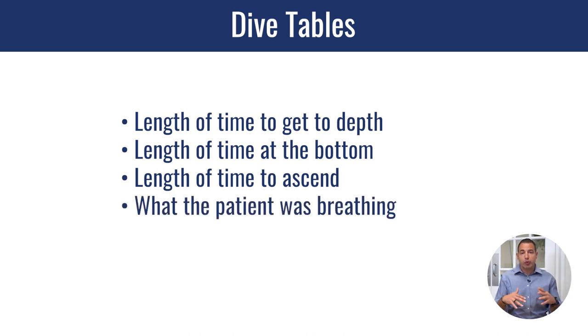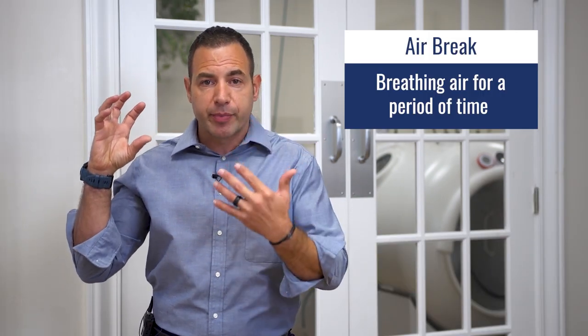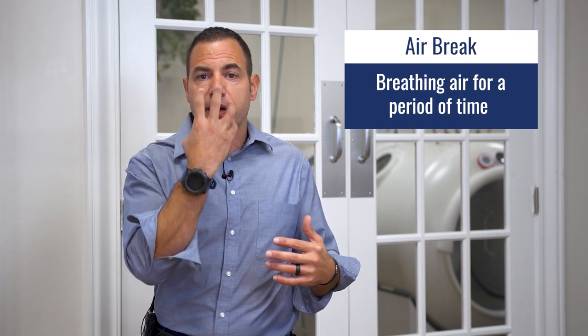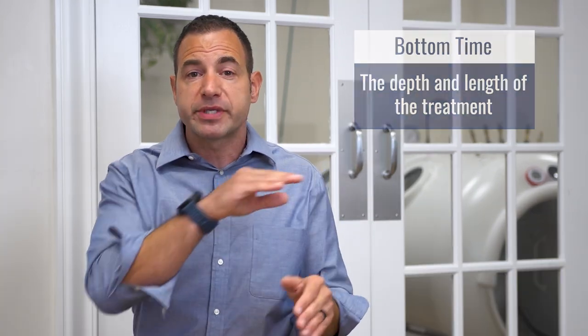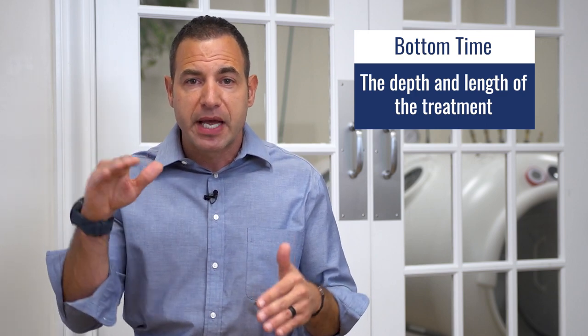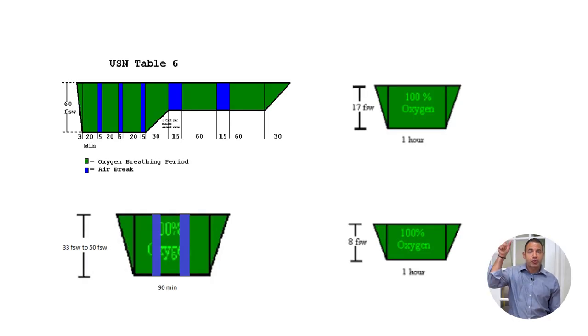The dive table also tells you what the patient was breathing — whether air, oxygen, or if they were taking air breaks. An air break is when you're on oxygen for a period of time, then you take the mask off and breathe air for a period of time, then put the oxygen back on. A dive table is a visual representation of the treatment as a whole, and it's a great tool for sharing protocols with other practitioners so they can duplicate it.